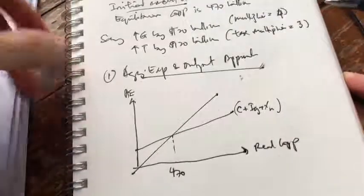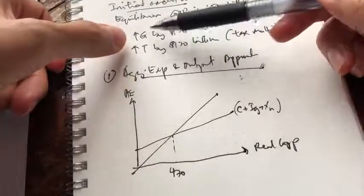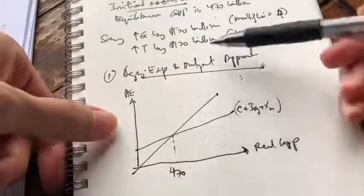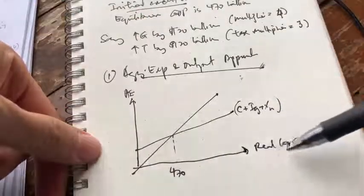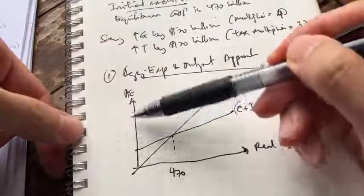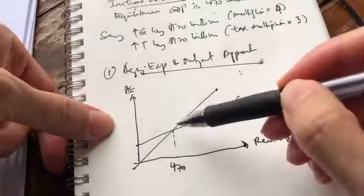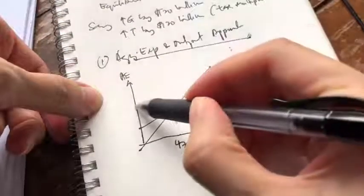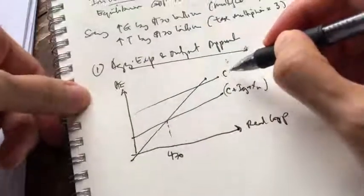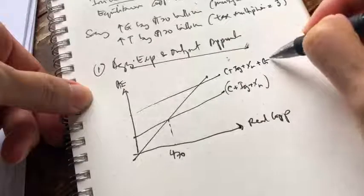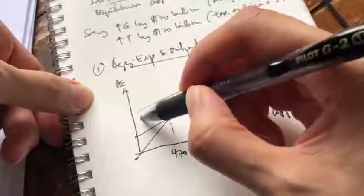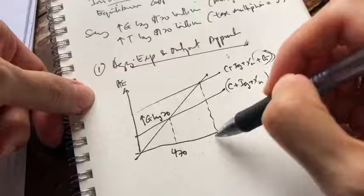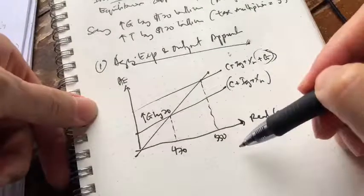Now let's sketch the changes. First, we have an increase in G. Since G is a component of aggregate spending, this is shown as a direct change — the entire aggregate expenditure line shifts upward by 20 billion in parallel. The new line is C plus IG plus XN plus G. This gives us a new equilibrium of 550 billion. However, this is not the only thing that happened — at the same time, we have an increase in T.